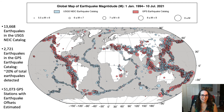13,668 earthquakes magnitude 5.5 or greater were recorded in the USGS NEIC catalog between January 1, 1994 and July 10, 2021.